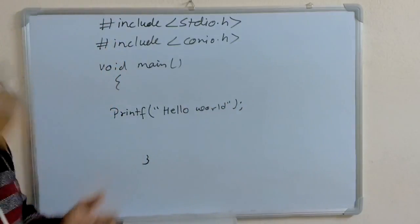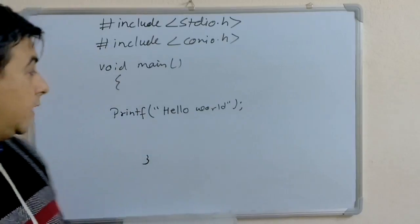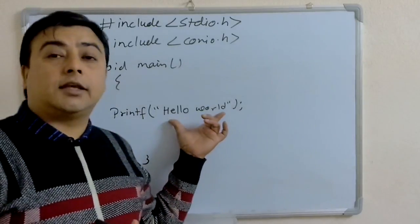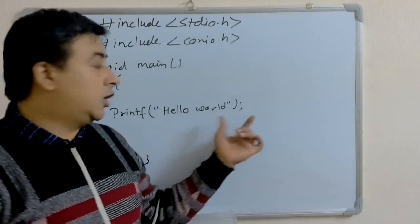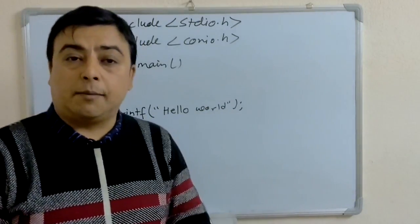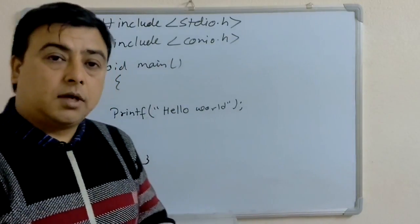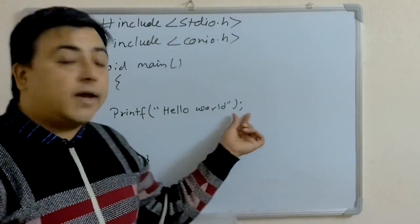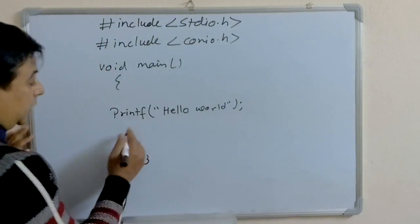This printf function displays the string that are written inside this quotation mark. And always the statement is terminated with semicolon. So, it is the executable part. This executable part always terminates with the semicolon.